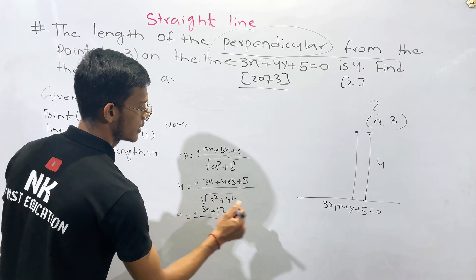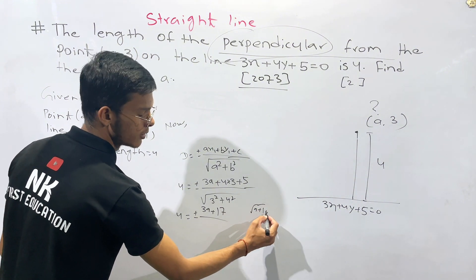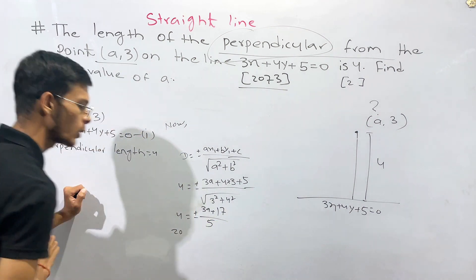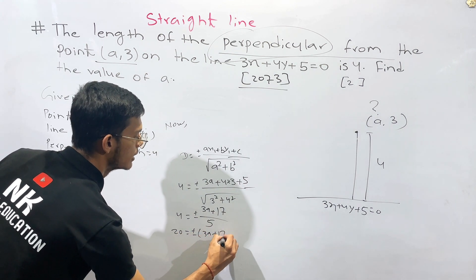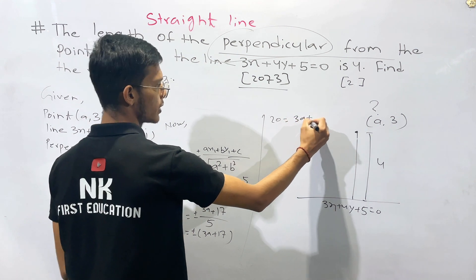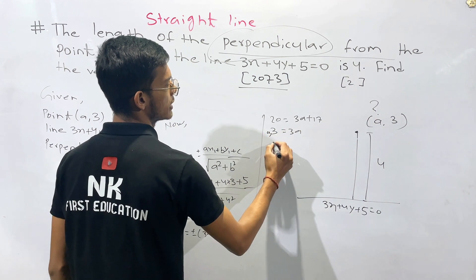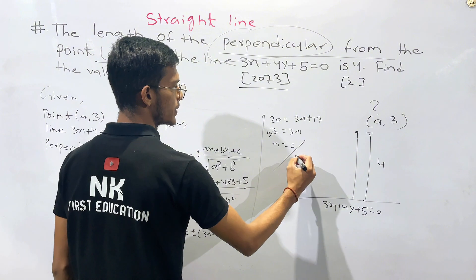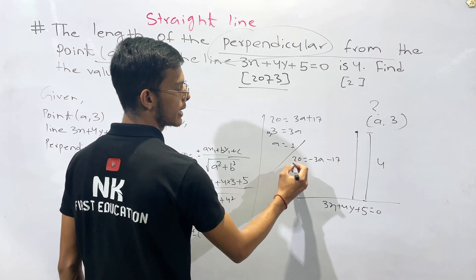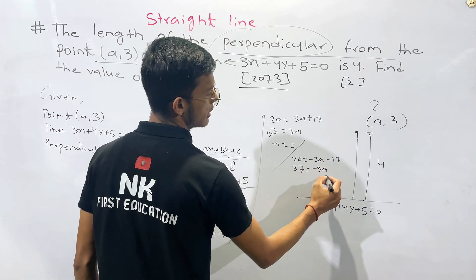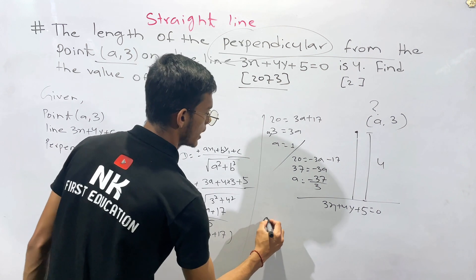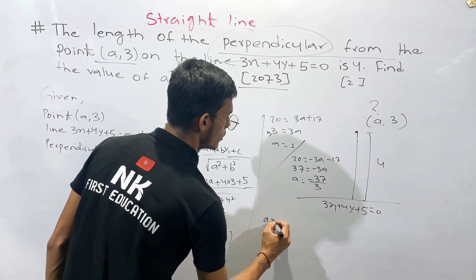Substituting the values: 3 and 4 give us 9 and 16, which sum to 25. The square root of 25 is 5, so the final answer is 5.